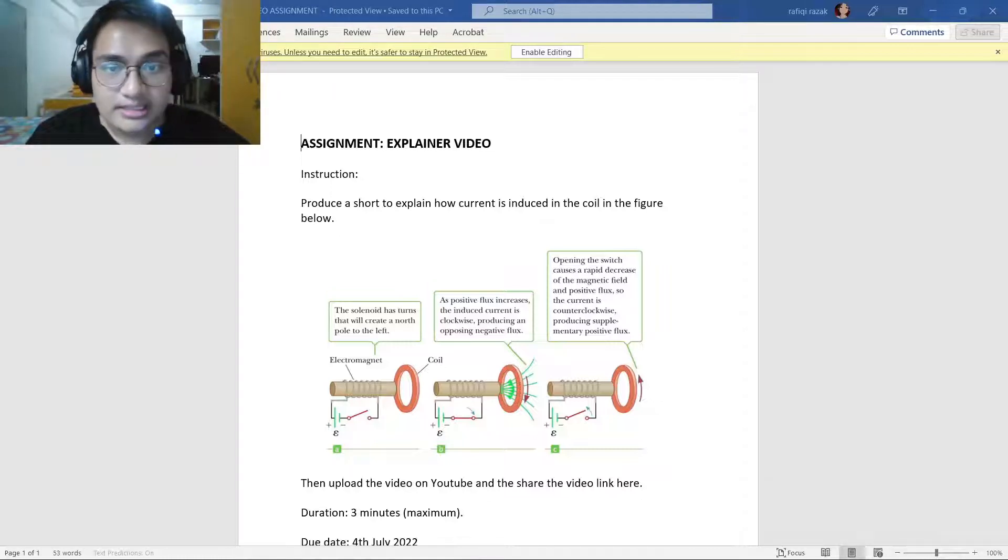When the switch is opened again, the current in the solenoid changes direction because the magnetic field and positive flux begin to decrease. Moving counterclockwise, the induced current creates positive flux through the coil, opposing the decrease in positive flux.